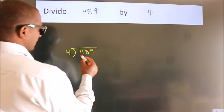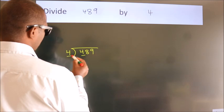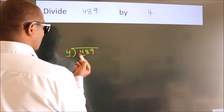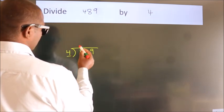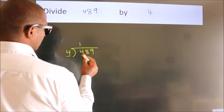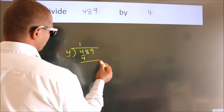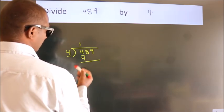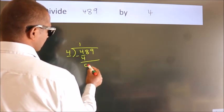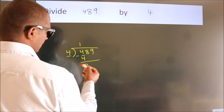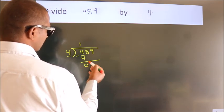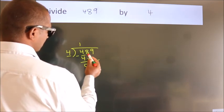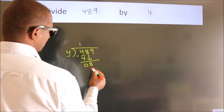Here we have 4. When do we get 4? In the 4 table — 4 once is 4. Now we should subtract, and we get 0. After this, bring down the beside number, so 8 comes down.